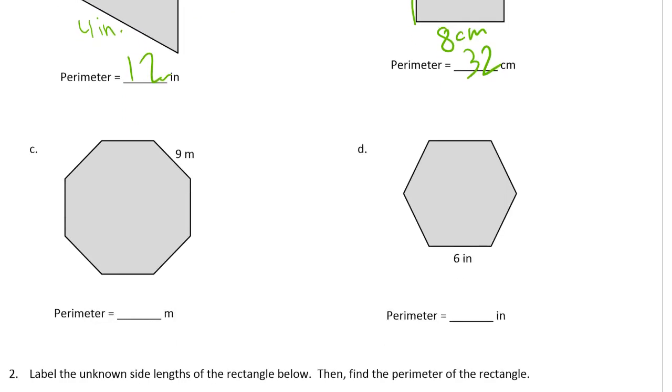And now we have a regular octagon and all the sides are 9 meters and 8 nines is 72 meters.